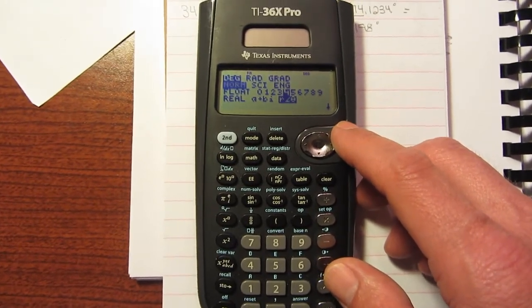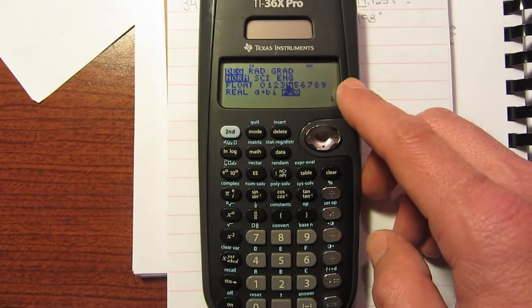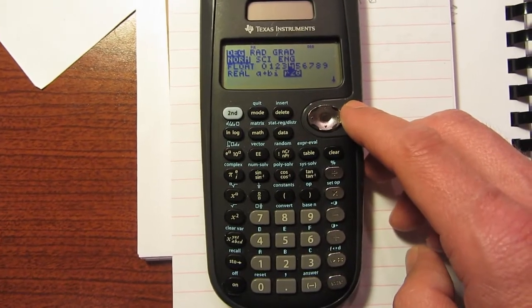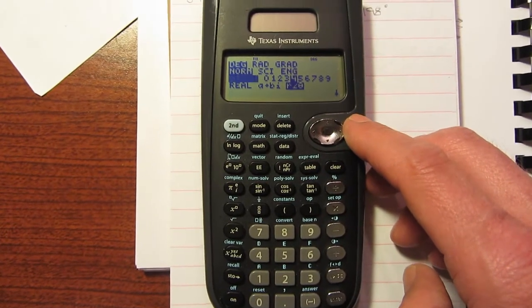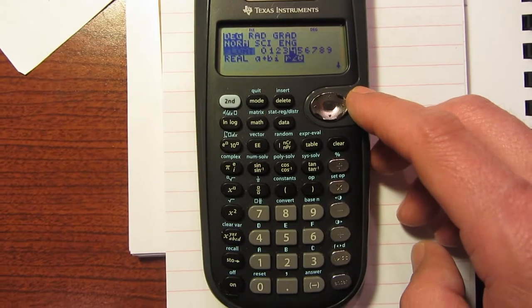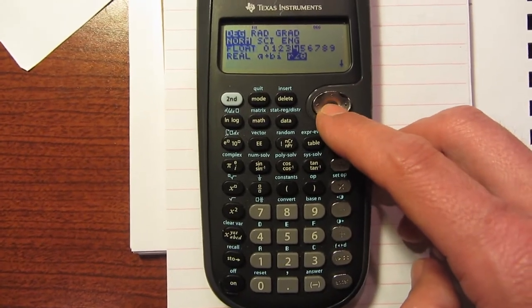But if you want to express those things exponentially, you can do it scientific and engineering. This one here, if we select float, that carries that decimal way too far out. So I usually go about four. That will get you through most everything.